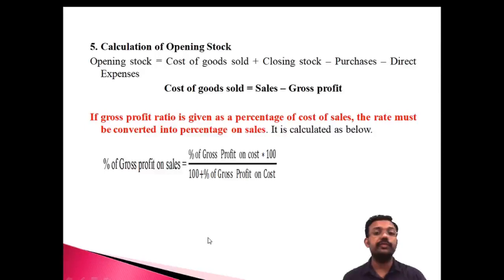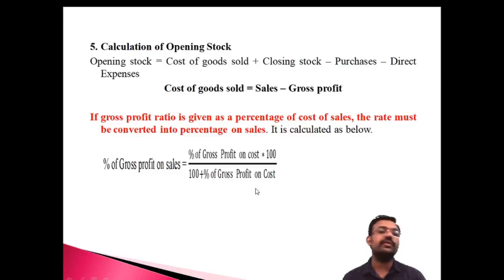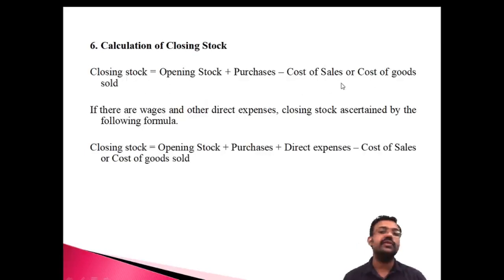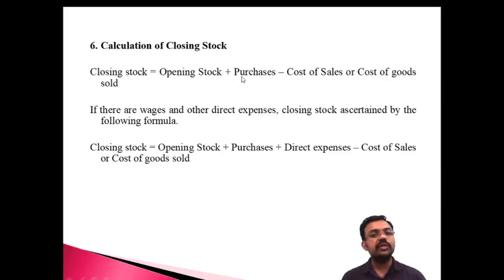The formula for converting is: Gross Profit % on Cost × 100, divided by (100 + Gross Profit % on Cost). Now, for closing stock: Closing Stock = Opening Stock + Purchases − Cost of Goods Sold (or Cost of Sales).